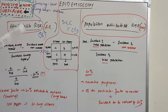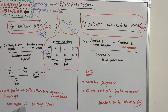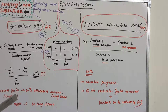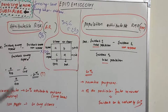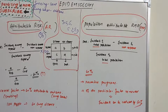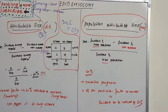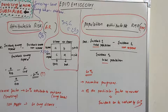Population attributable risk is commonly applied in preventive programs such as smoking cessation. If the population attributable risk is 60%, then implementing tobacco cessation counseling could prevent 60 out of every 100 lung cancers, leaving only 40 occurring. The key difference between attributable risk and population attributable risk is that the denominator changes from the exposed group to the total population.